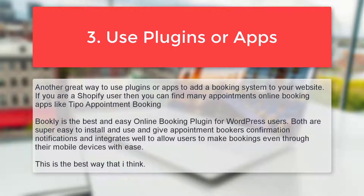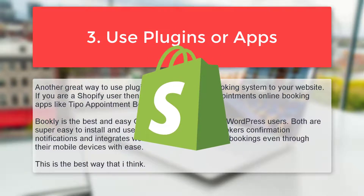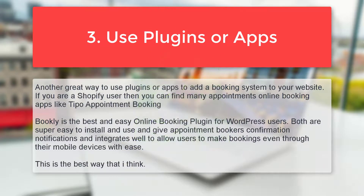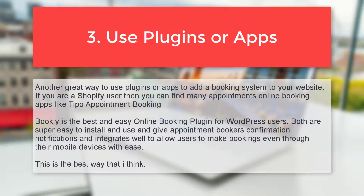Number three: use plugins or apps. Another great way to add a booking system to your website is to use plugins or apps. If you are a Shopify user, you can find many appointment and online booking apps. If you are a WordPress user, you can try the Bookly WordPress plugin. Bookly is a best and easy online booking plugin for WordPress users. Both are super easy to install and use, and give appointment booking confirmation notifications.